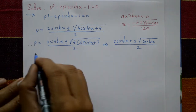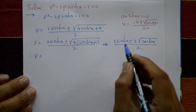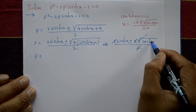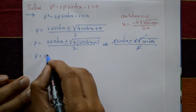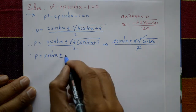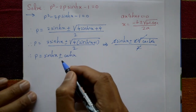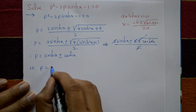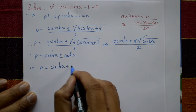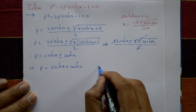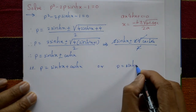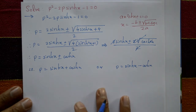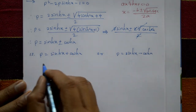Now sinh²(x) + 1 = cosh²(x) by the hyperbolic identity, so √(4·cosh²(x)) = 2·cosh(x). The 2 cancels with the denominator, giving p = sinh(x) ± cosh(x). Taking the two cases: p = sinh(x) + cosh(x), or p = sinh(x) - cosh(x).